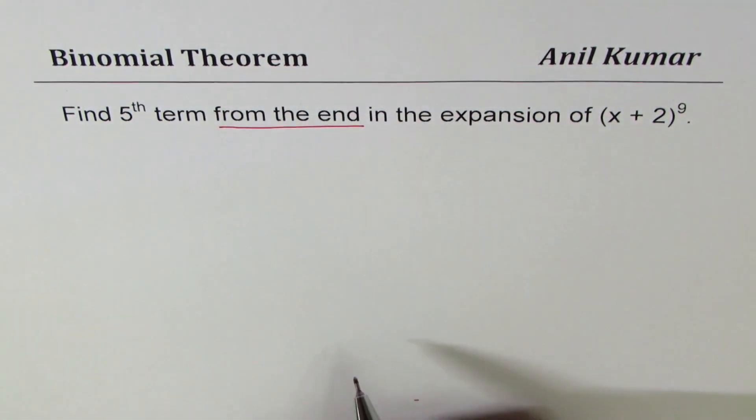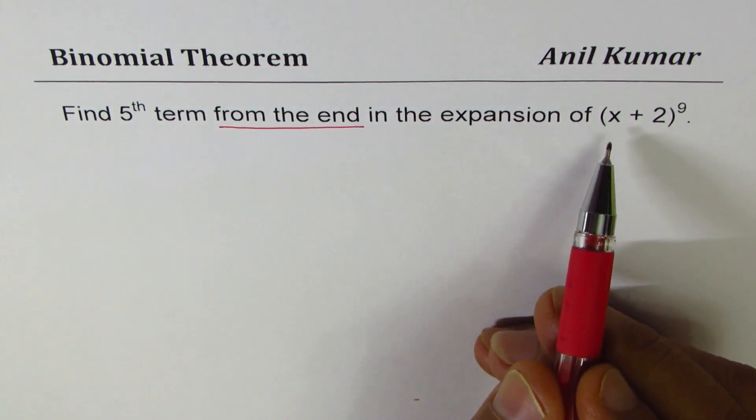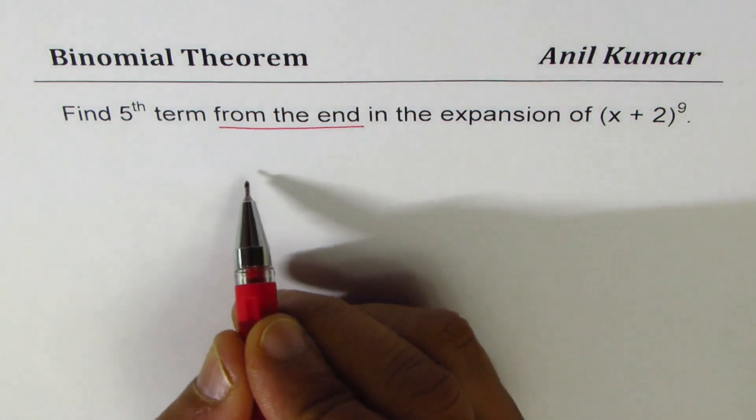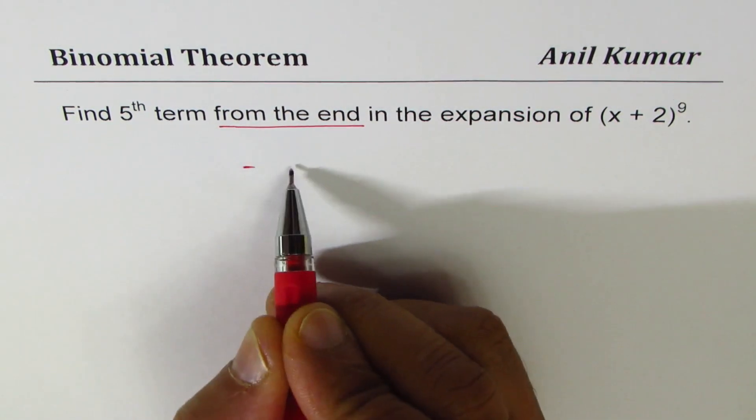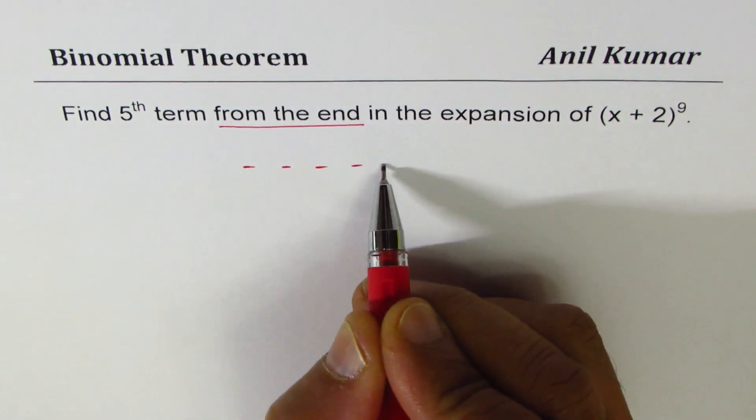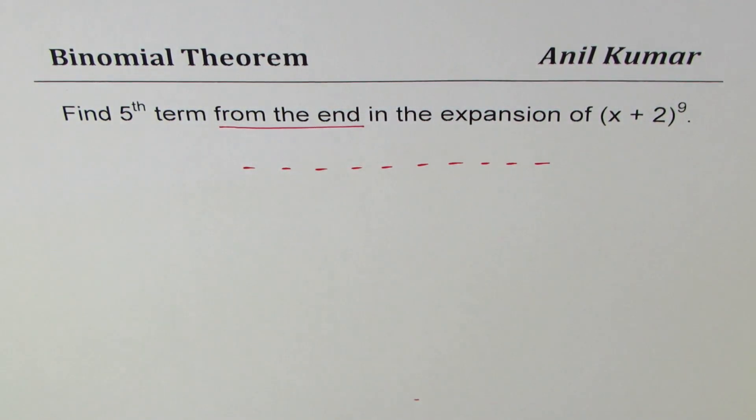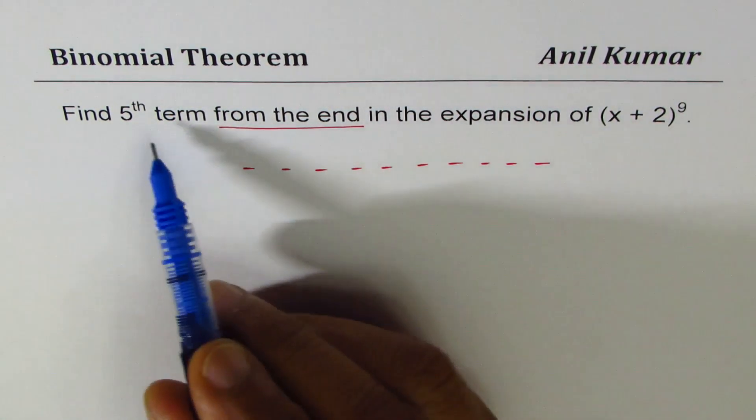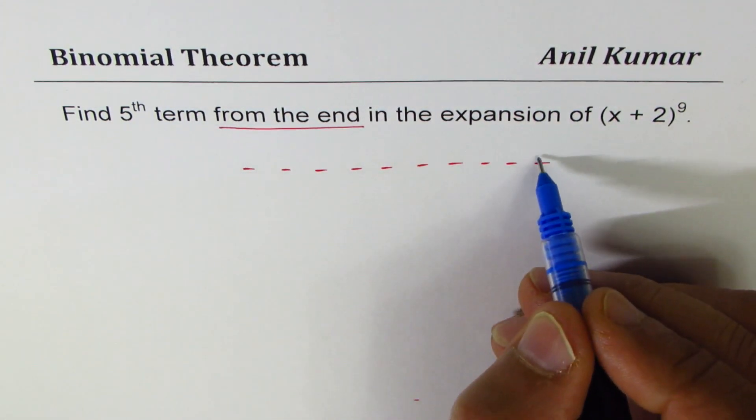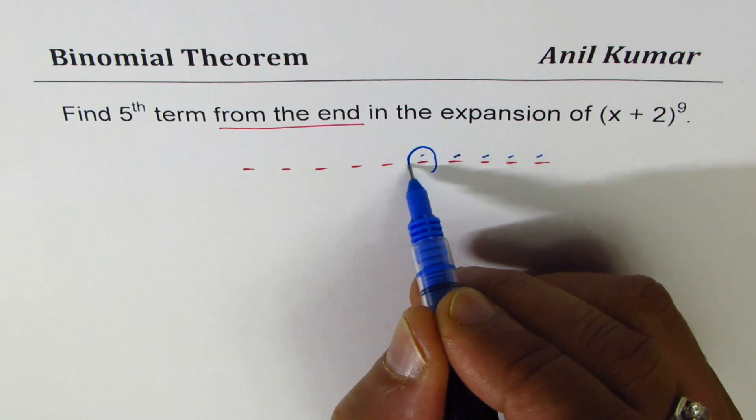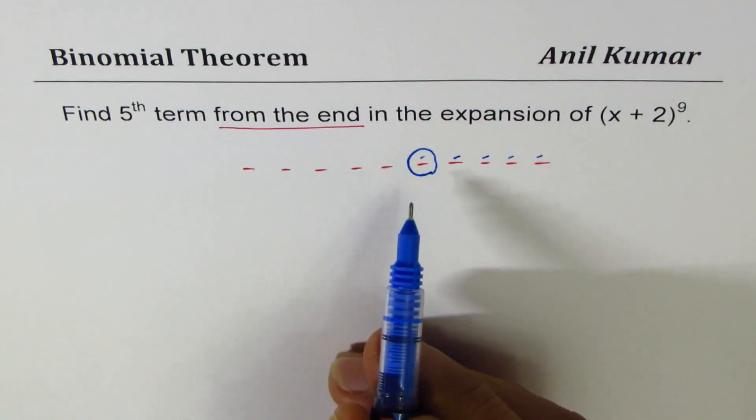In the expansion of (x + 2) to the power of 9, how many terms do you expect? There'll be 10 terms. Let's say 1, 2, 3, 4, 5, 6, 7, 8, 9, 10. We are interested in fifth term from the end. This is first, second, third, fourth, fifth. This term.